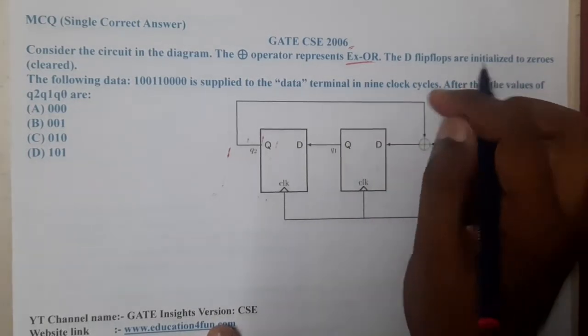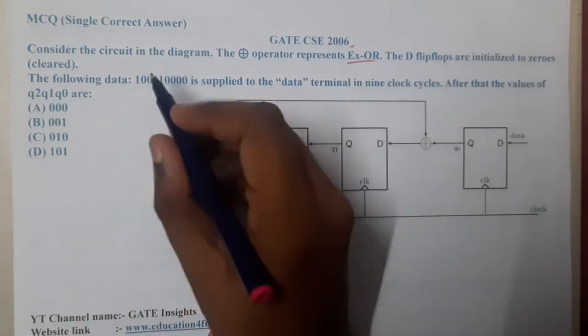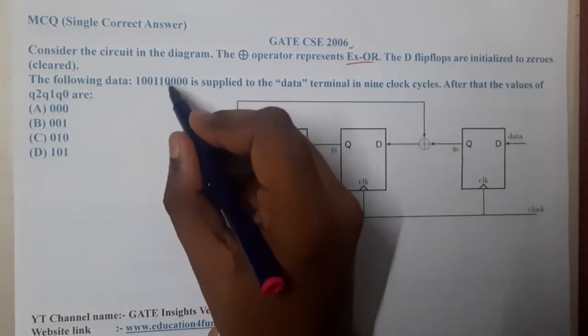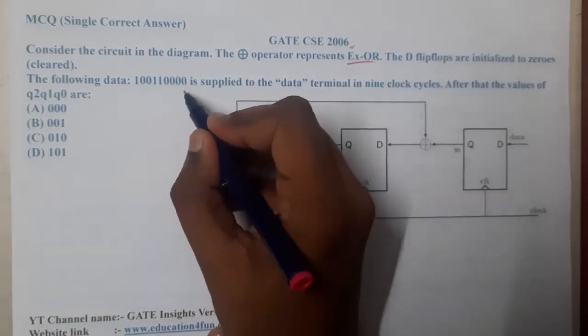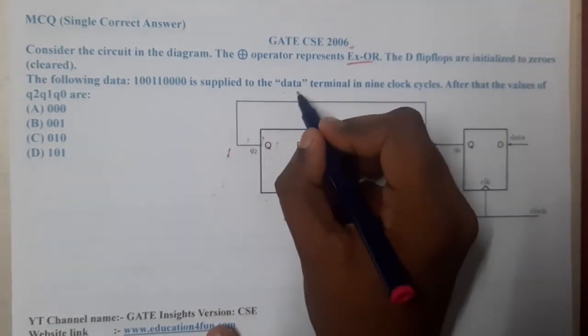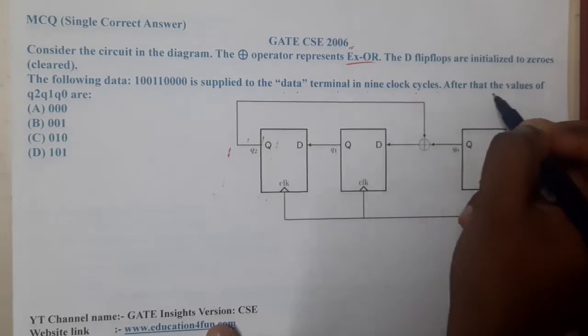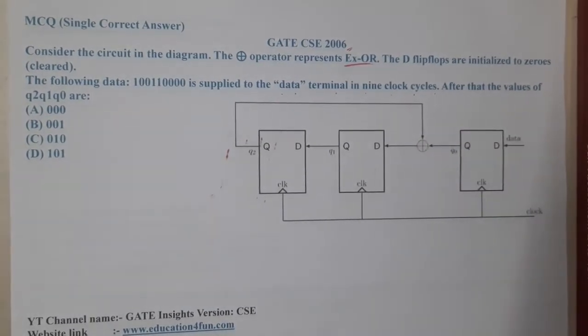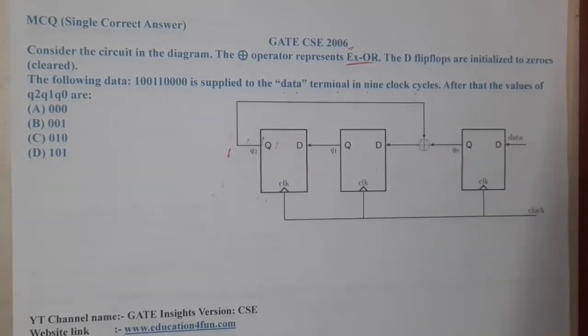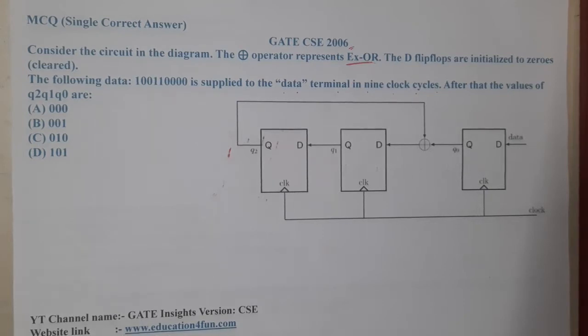The following data: 1, 0, 1, 1, 0, 0, 0, 0 is supplied to the data terminal in nine clock cycles. After passing these values, what will be the final set? This is a clock-based question. These types of questions, please don't try to solve them with the diagrams because with the diagram or the tabler method, this question might be a bit confusing.